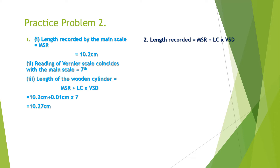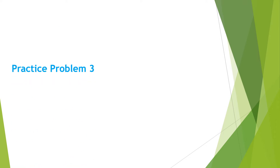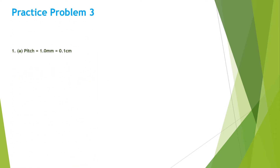Practice problem two, second part: we need to calculate the length from the diagram. Using the formula — main scale reading plus least count into vernier scale division — the main scale reading is 7.3 centimeter, least count is 0.01 centimeter, and the fifth division coincides. So the length comes to be 7.35 centimeter.